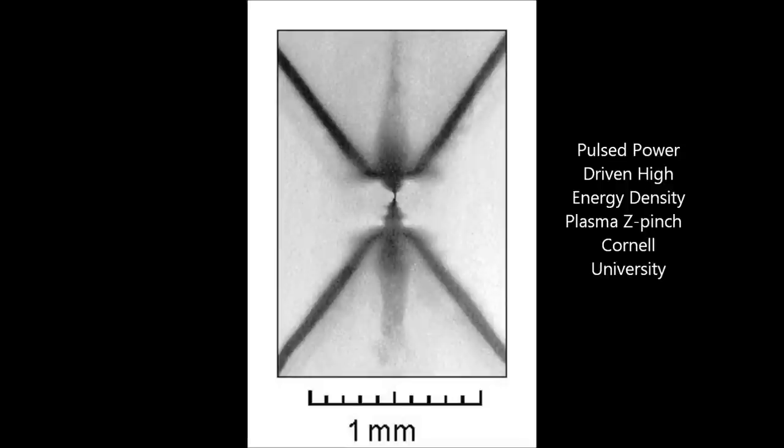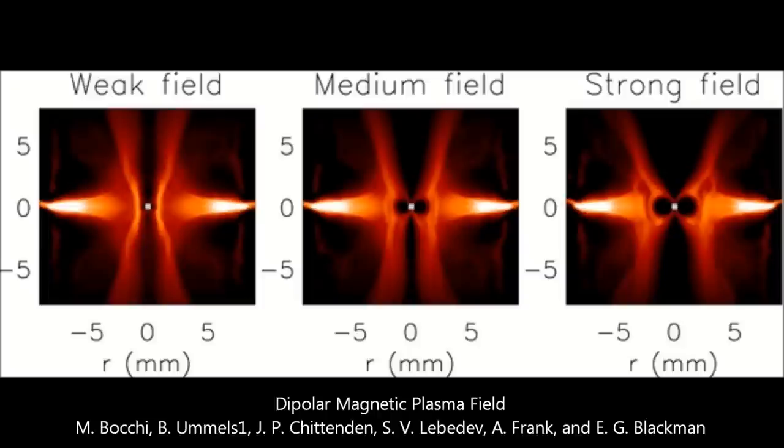Again, in a slightly different experiment at Cornell University, yielding the same exact shape. When you look at dipolar magnetic plasma fields, you start to see that same shape. Spherical torus yields the same results.